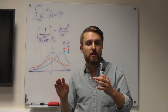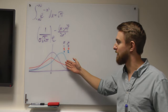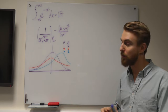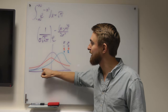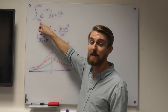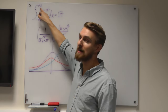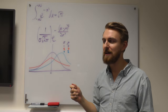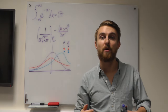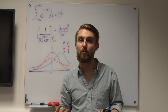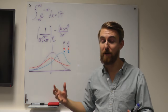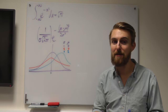We want to use the normal distribution to model random variables, which means we need to be able to integrate finite regions under our curve. We've seen how to integrate between infinite limits, but those limits were crucial to doing the Gaussian integral at all. We don't have the same method or tricks for integration between finite limits.